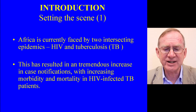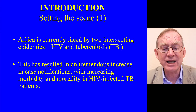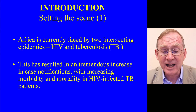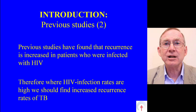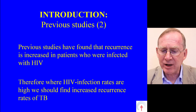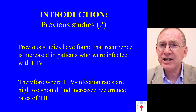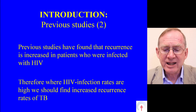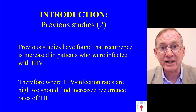This is how we would write the introduction to recurrent tuberculosis. The first paragraph sets the scene: 'Africa is currently faced by two intersecting epidemics — HIV and tuberculosis. This has resulted in a tremendous increase in case notifications with increasing morbidity and mortality in HIV-infected TB patients.' Second paragraph: 'Previous studies, however, have found that recurrence is increased in patients who were infected with HIV' — here I would give those four references. 'Therefore, where HIV infection rates are high, we should find increased recurrent rates of tuberculosis.'